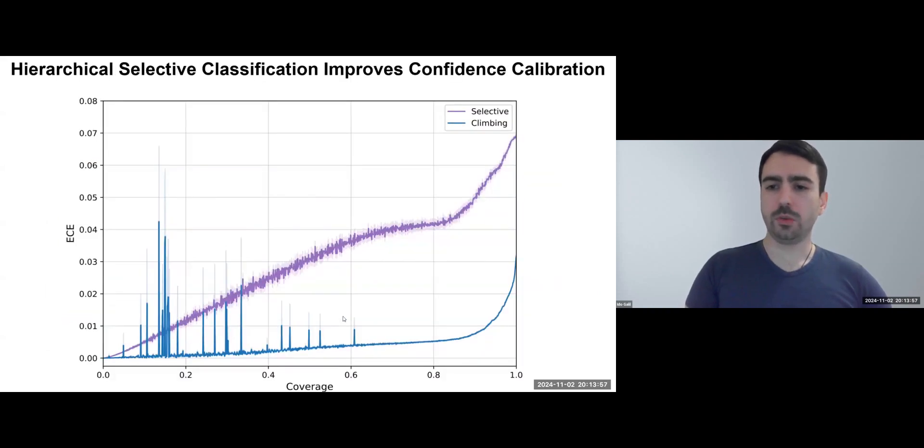Finally, we note that hierarchical selective classification significantly improves confidence calibration across most coverage levels. We believe specialized selective hierarchical techniques could enhance calibration even further.